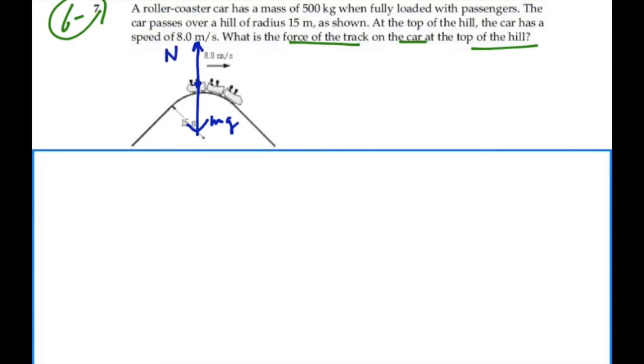There's no force in the forward direction because the car is moving at constant velocity. So there's no acceleration in the forward direction. Our net acceleration is just going to be centripetal, and it's going to be towards the center of this circle. That will be our positive acceleration direction.